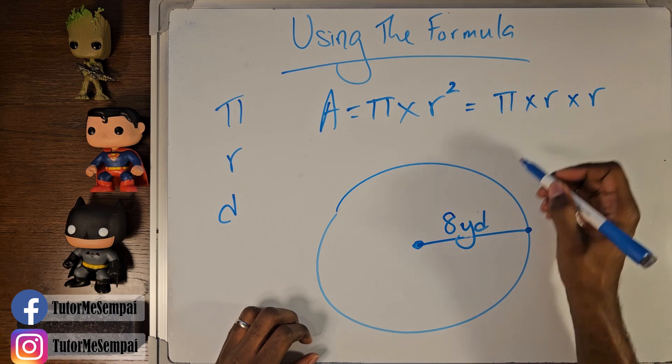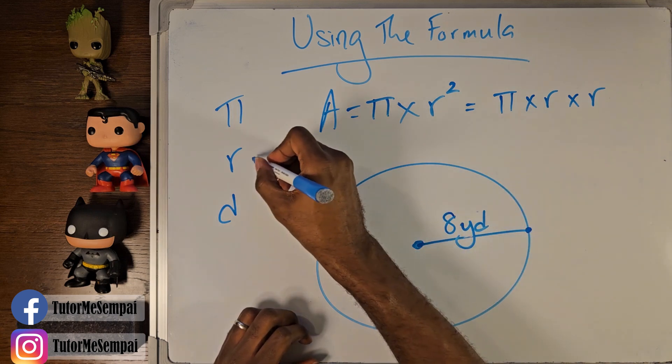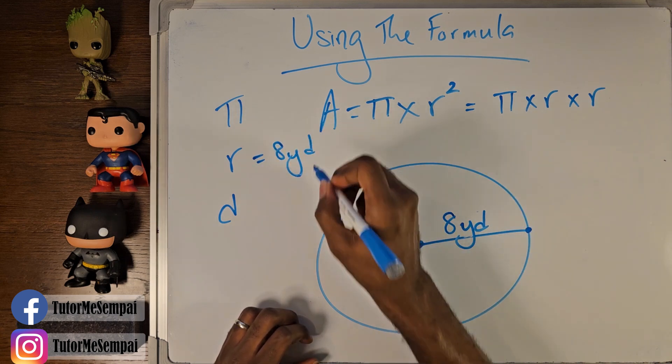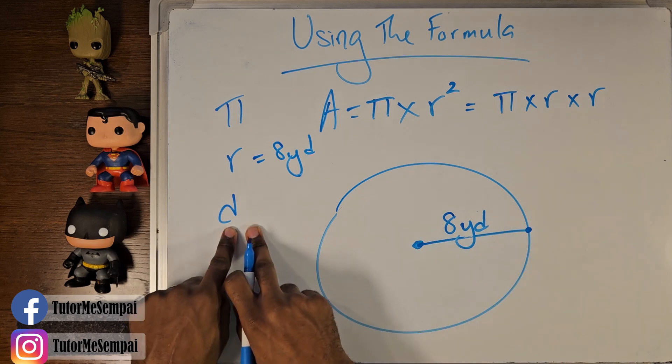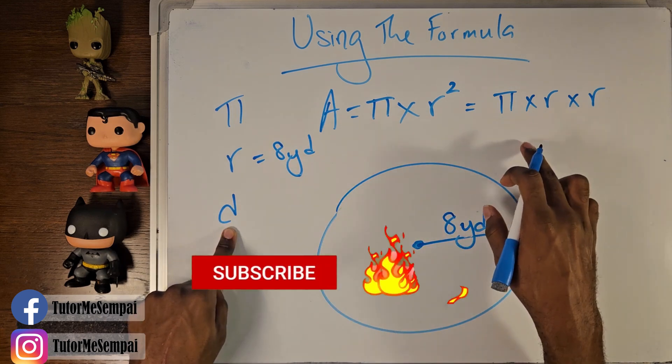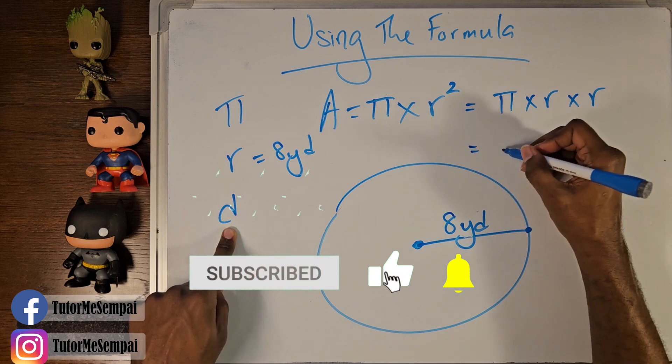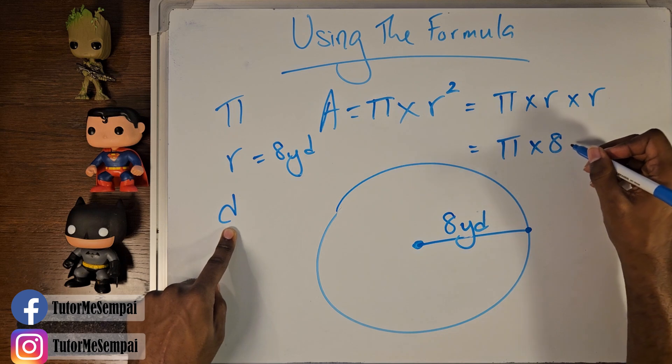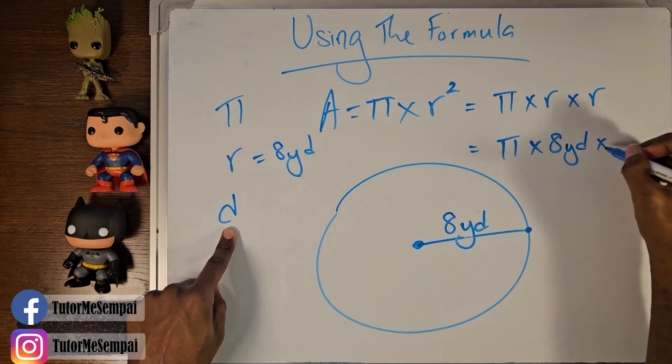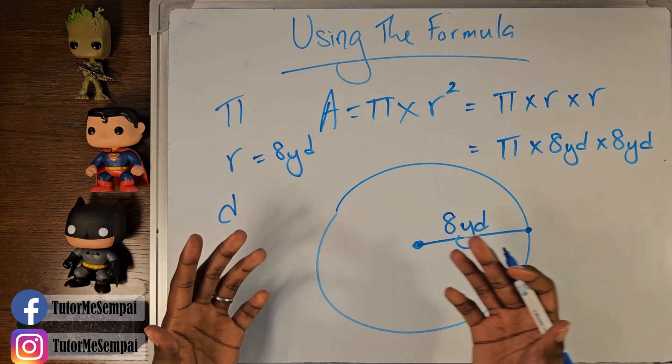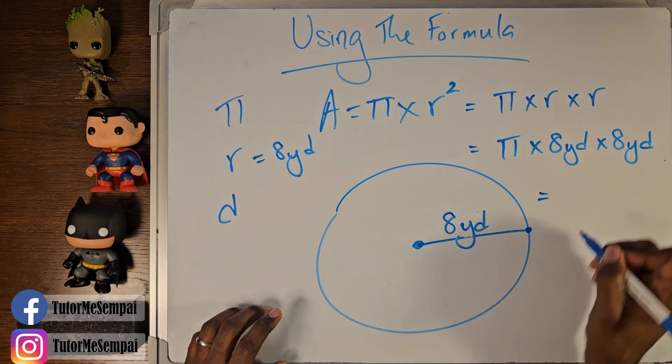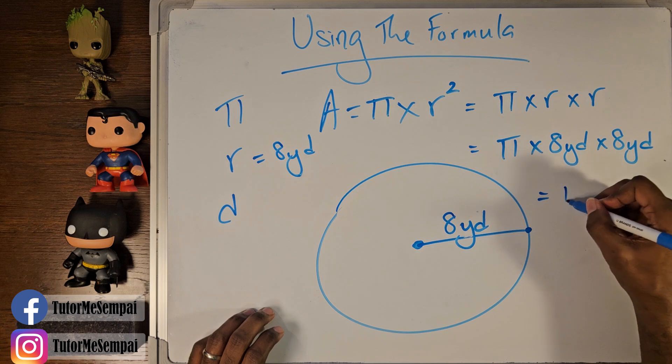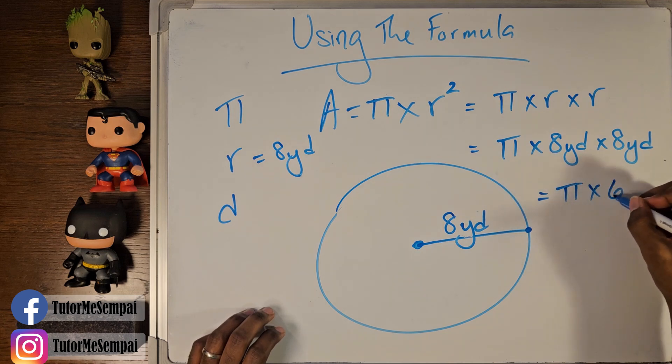Now eight yards is going to be the radius. We don't know a diameter, but we don't need the diameter because we have the radius. So we can substitute that into our formula. So it's pi times eight yards times eight yards. And what's eight yards times eight yards? That's going to be pi times 64 yards.